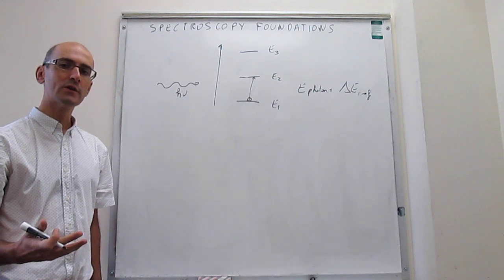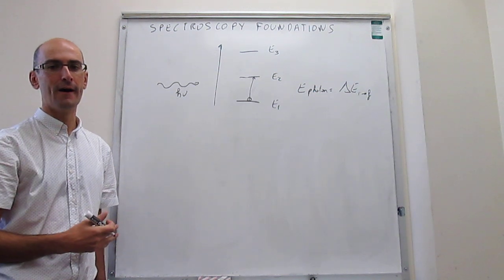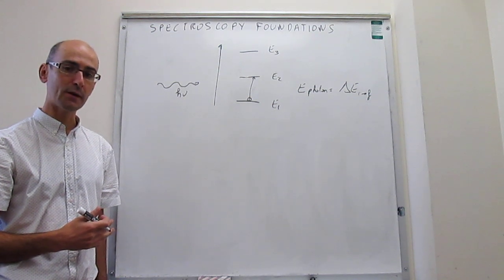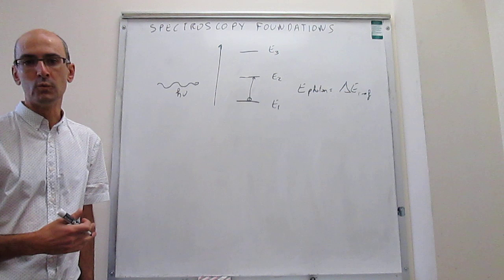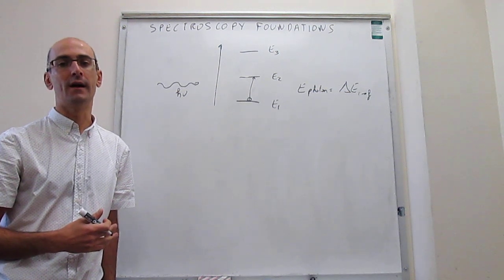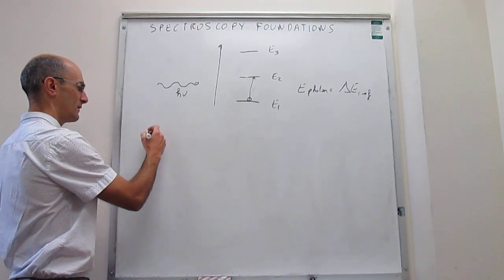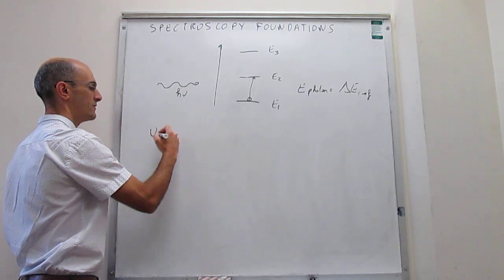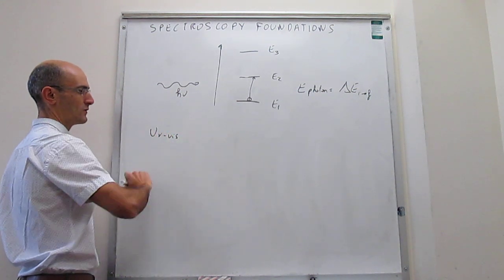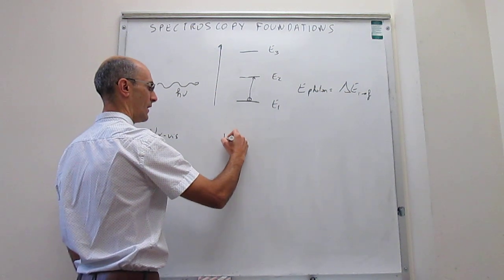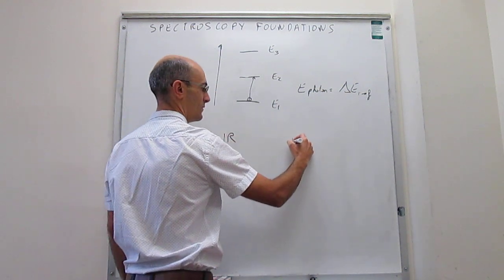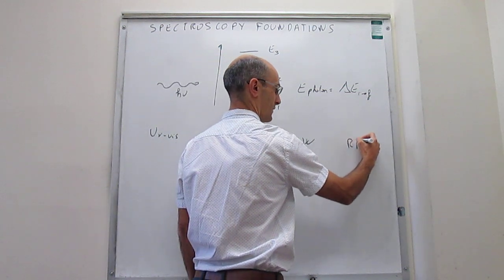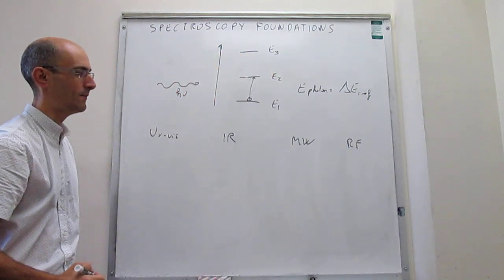Well, so it turns out that you can actually do this for almost any type of photon that you have in the electromagnetic radiation spectrum. We're actually going to see the ones that are more common for chemistry. So going in terms of decreasing energy, you'd have photons in the UV-Vis range, then you will have photons in the infrared, then you will have photons in the microwave, and finally you will have photons of radio frequency properties.